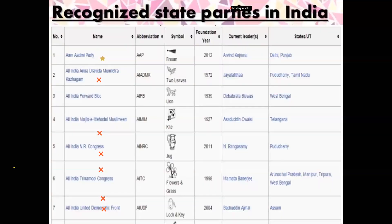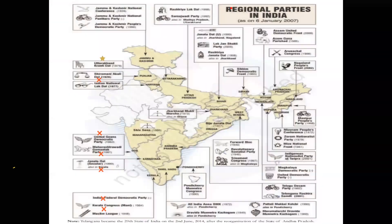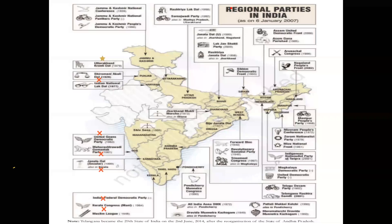Some of the most important regional political parties include Aam Aadmi Party, AIADMK, and DMK, which play important roles in our country. Looking at the map, many important political parties are visible. In Haryana, Indian National Lok Dal formed in 1977; Shiromani Akali Dal founded in 1929 in Punjab; and Uttarakhand Kranti Dal are important regional parties that play a significant role in Indian politics.